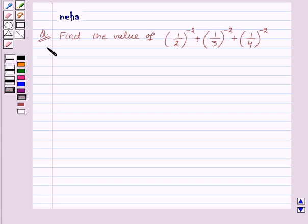The question says, find the value of 1 upon 2 to the power minus 2 plus 1 upon 3 to the power minus 2 plus 1 upon 4 to the power minus 2.